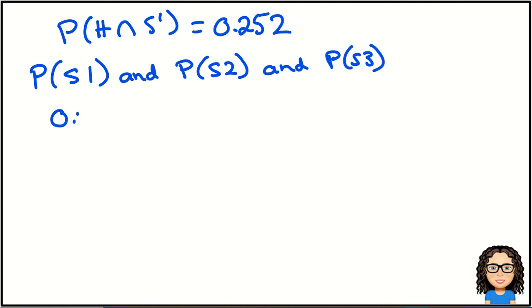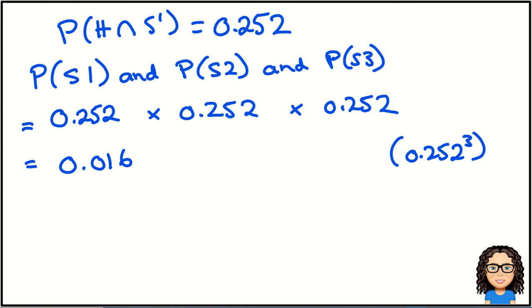So in probability, 'and' means to multiply. So we are going to take 0.252 and multiply that by itself three times, and that is going to give me a probability of 0.016. Now you could also have done that as 0.252 to the power of 3—that would give the same answer.